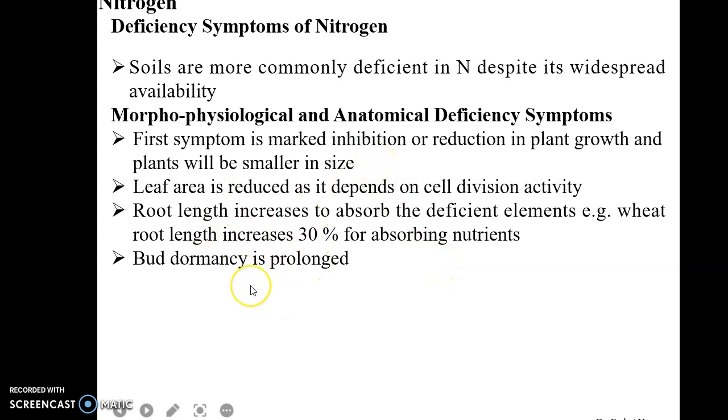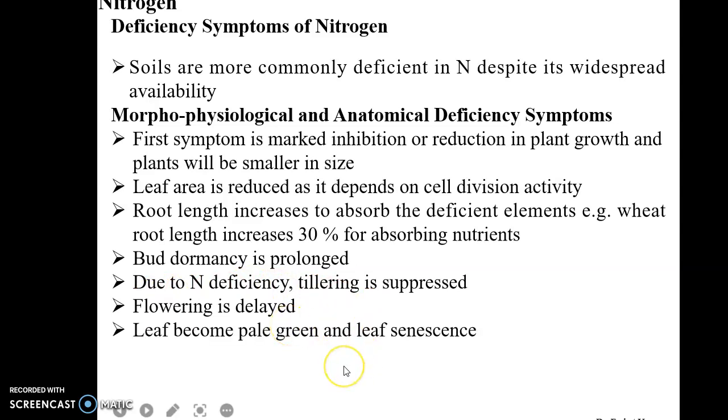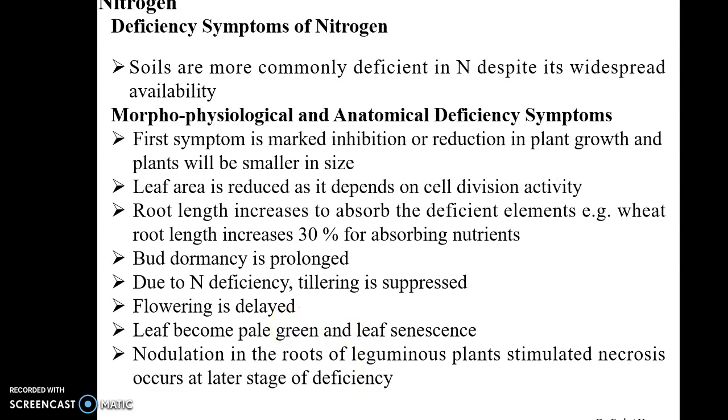Bud dormancy is prolonged and tillering is suppressed. Flowering is delayed and leaves become pale green, and leaf senescence occurs. Nodulation in the root of leguminous plants stimulates necrosis, which occurs at the later stage of nitrogen deficiency.